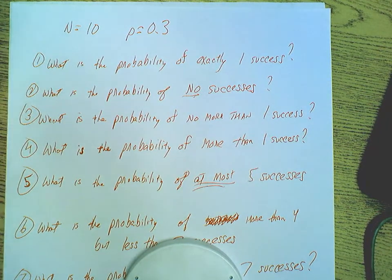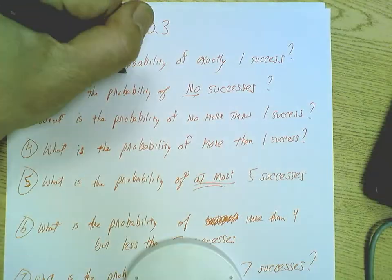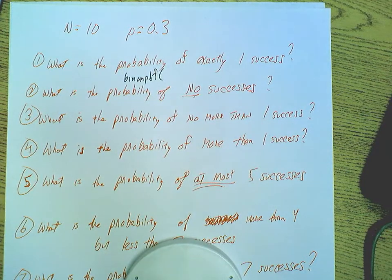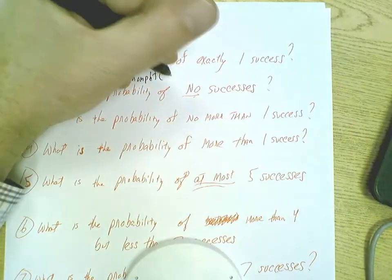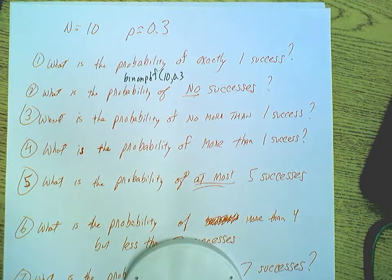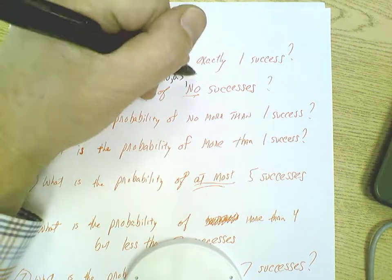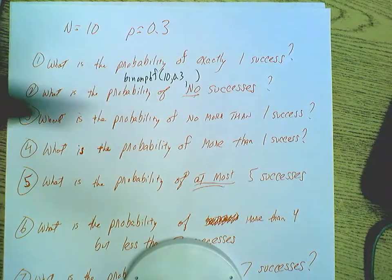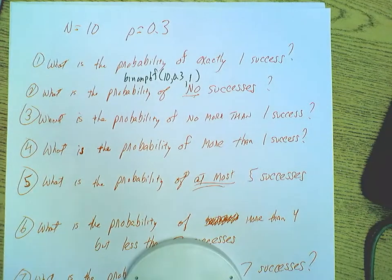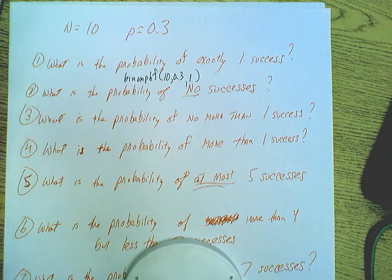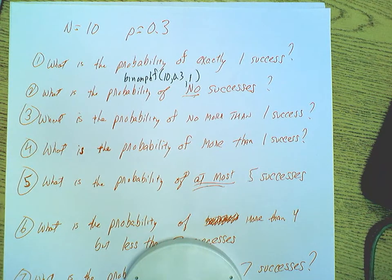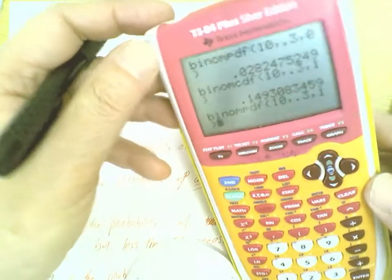What's the probability of exactly one success? Well as soon as we hear the word exactly, we know we are working with a binomial PDF. For all these examples we're always going to have a 10 and a 0.3, and the last parameter just involves the number of successes we're trying to focus in on. In this case we want exactly one success, so I can work with binomial PDF 10, 0.3, 1. And if I do that I'll come up with the answer of, let's see here on my calculator, 0.121.